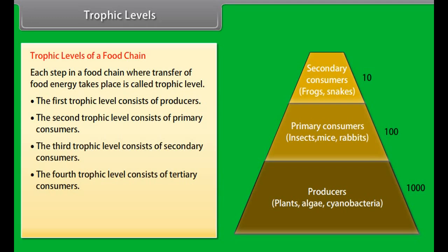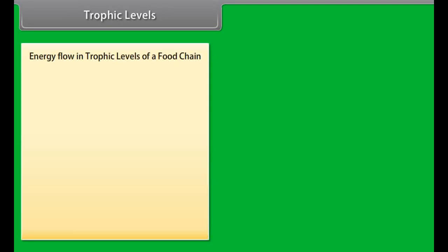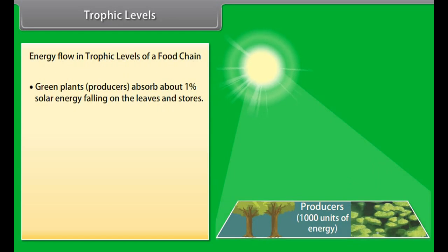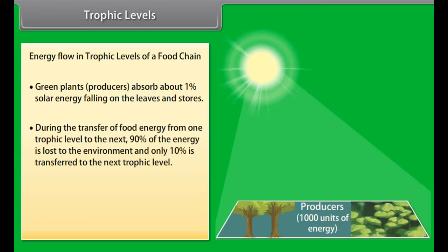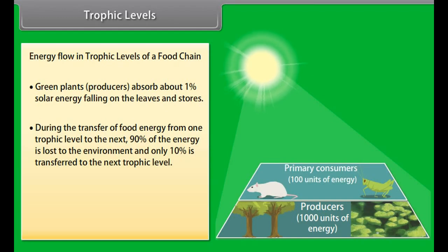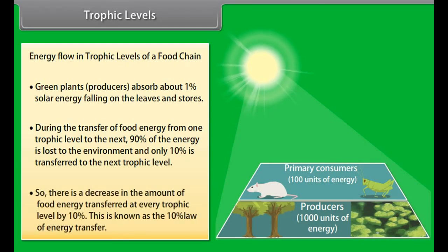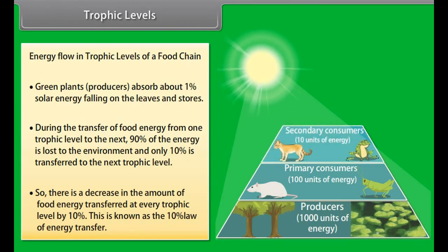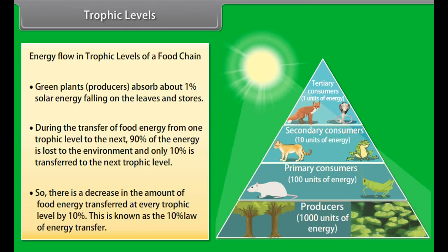Trophic levels. Each step in a food chain where transfer of food energy takes place is called a trophic level. The first trophic level consists of producers. The second trophic level consists of primary consumers. The third trophic level consists of secondary consumers. The fourth trophic level consists of tertiary consumers. Since the transfer of food energy decreases at every trophic level, the number of trophic levels is limited and does not exceed four or five.